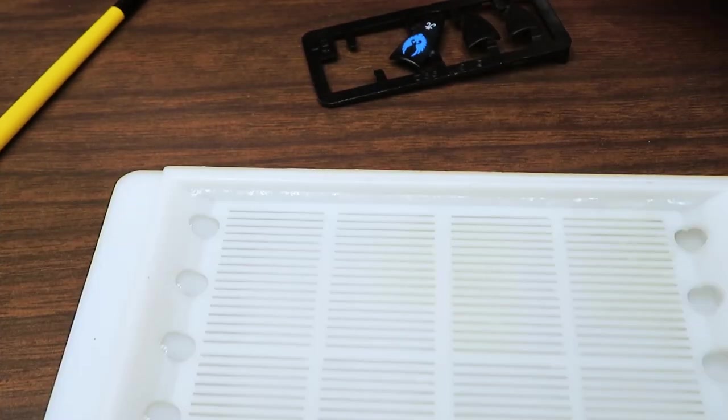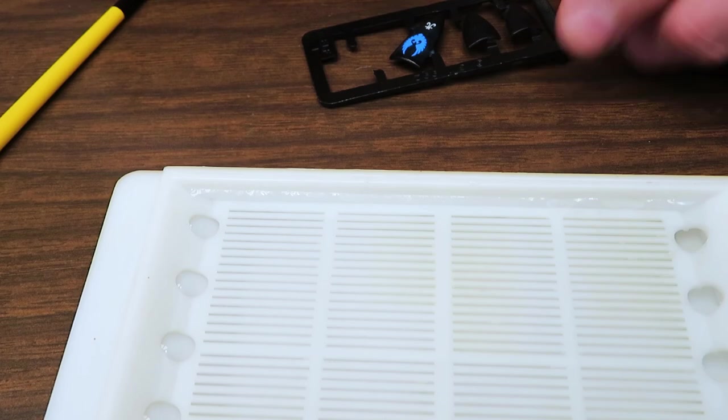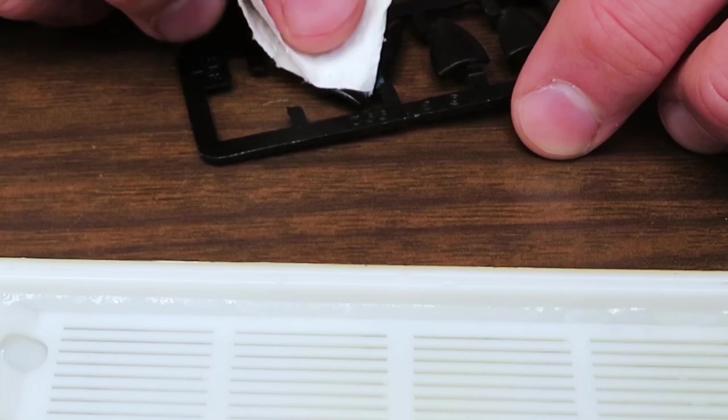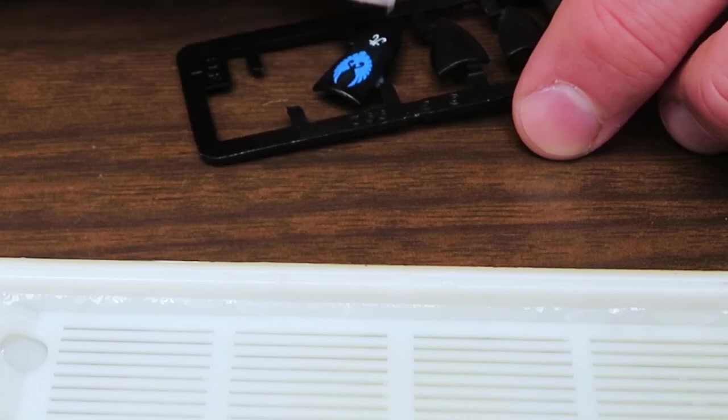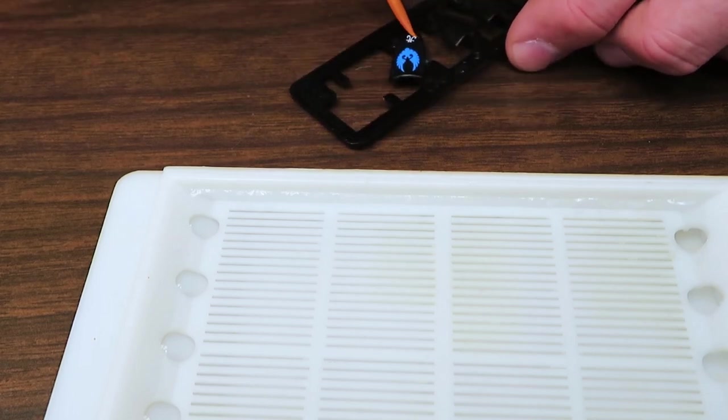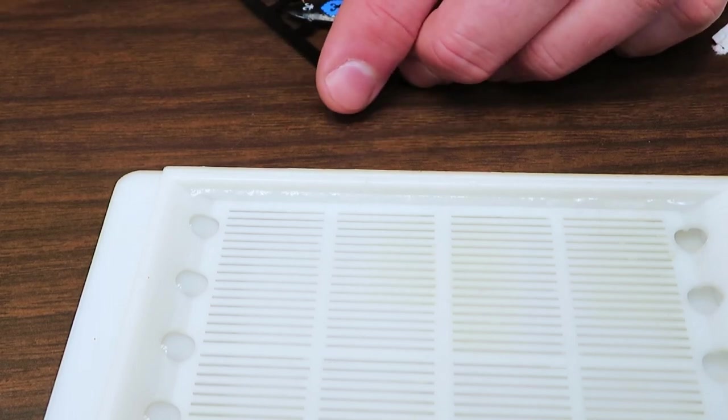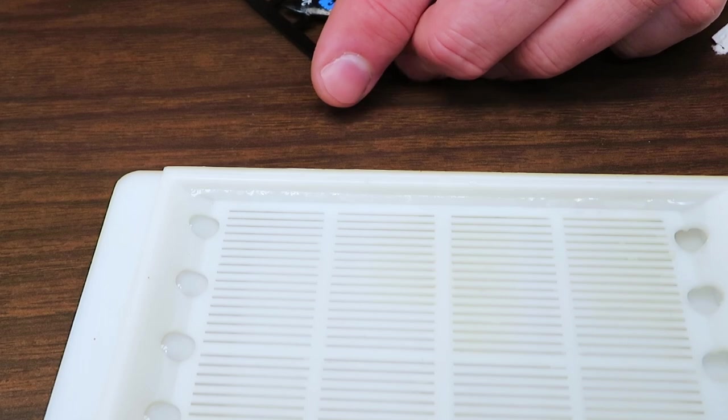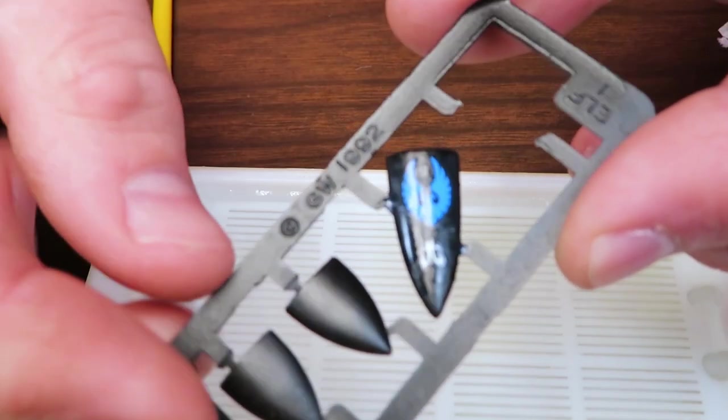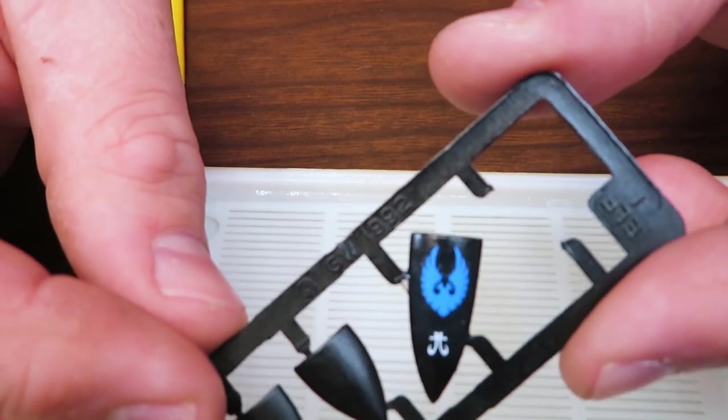And then I'm going to take the corner of the paper towel and just kind of tap around that surface. Try not to move the decals too much to get away any extra water. Do any fine-tuning. Okay. And you can see that's set on there now.